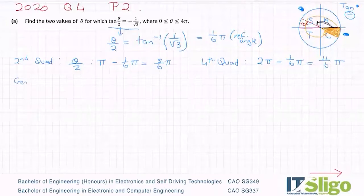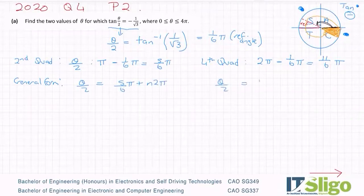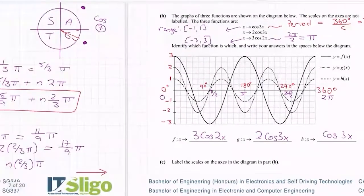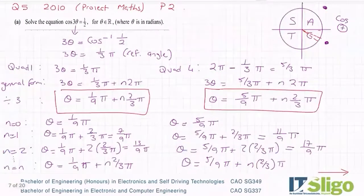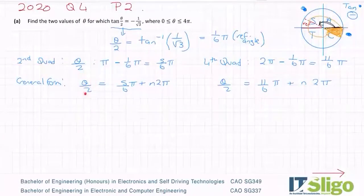Let's write them in general form. So θ/2 equals 5/6π plus n·2π, and θ/2 equals 11/6π plus n·2π. So nothing different there, no steps different at all. I'm carrying the fraction with me all the way down, and I'm not letting it bother me. Same theory here, we're still solving for theta the angle, not θ/2.